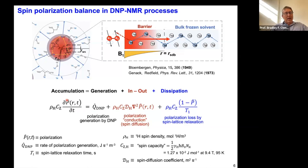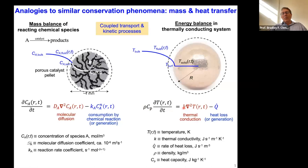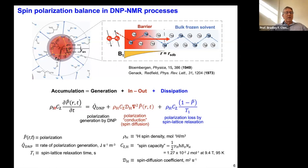We have that similarly in the DNP NMR process. We can do a spin polarization balance in an exactly analogous way. We have an accumulation term — this time-dependent term — but instead of temperature and concentration, we consider polarization, which we can measure directly in our NMR experiment. We have terms that are going to look familiar: density, heat capacity, thermal conductivity, and a generation term.